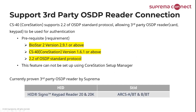Support for third-party OSDP: the CS40 CoreStation supports OSDP standard protocol version 2.2, allowing third-party OSDP readers such as card and keypad to be used for authentication. There are prerequisites — requirements in order to use this feature. You need to be using BioStar 2 version 2.9.1 or above. Also check your CoreStation firmware version — it must be 1.6.1 or above. The OSDP reader must also support OSDP standard protocol version 2.2.